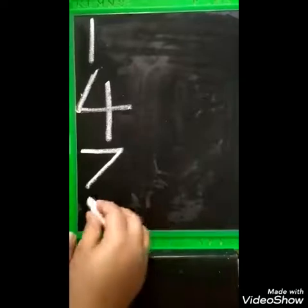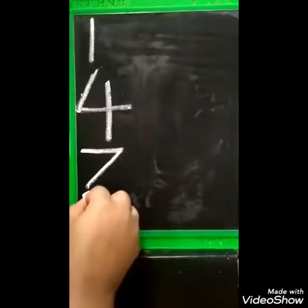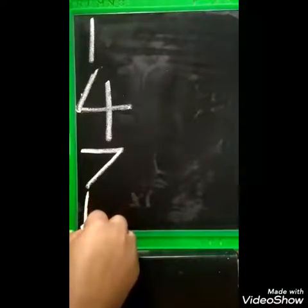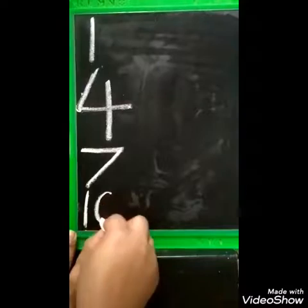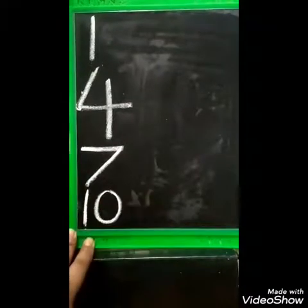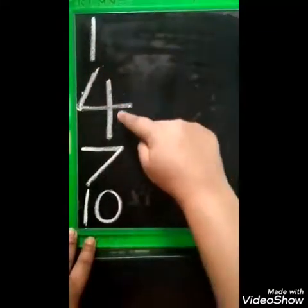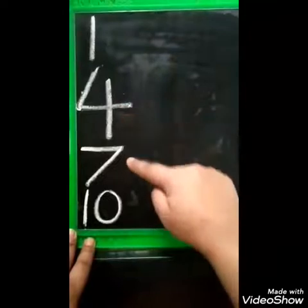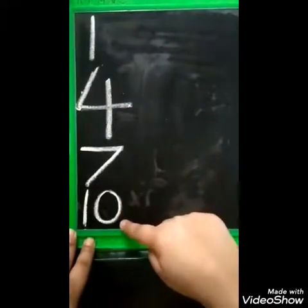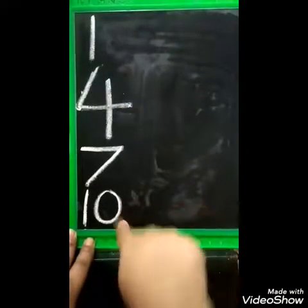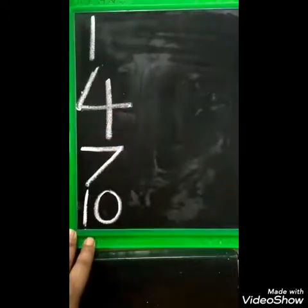Now how to write number 10? Standing line, number 1 and 0 — 10. So 1, 4, 7 and 10 — we have done all these numbers.